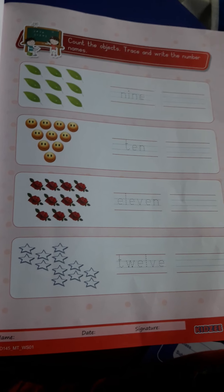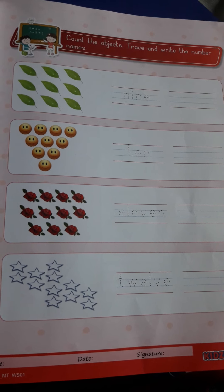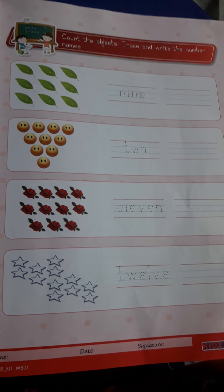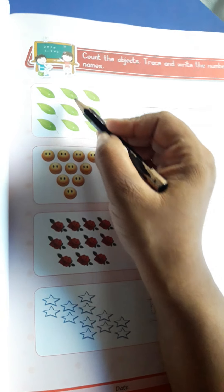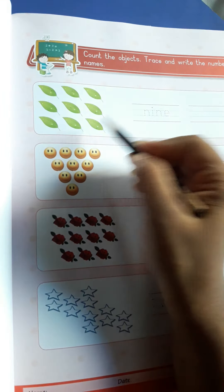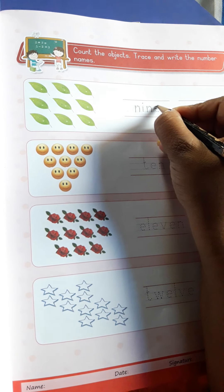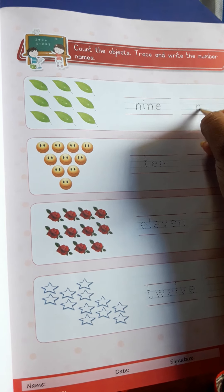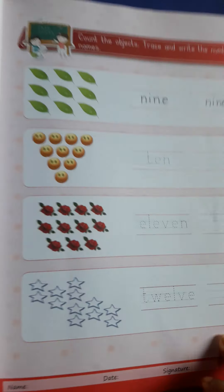Look, it is your math homework worksheet. Count the objects, trace and write the number names. At first you have to count, 1, 2, 3, 4, 5, 6, 7, 8, 9. You have to trace number name 9 and you have to write here. In this way you have to do.